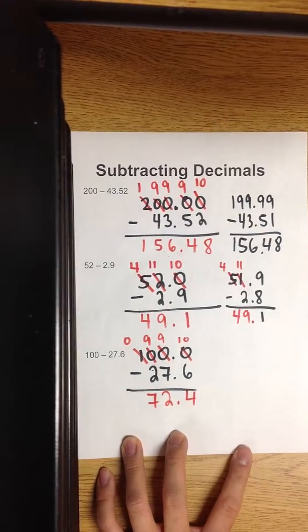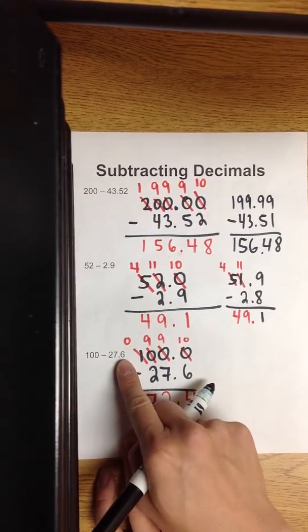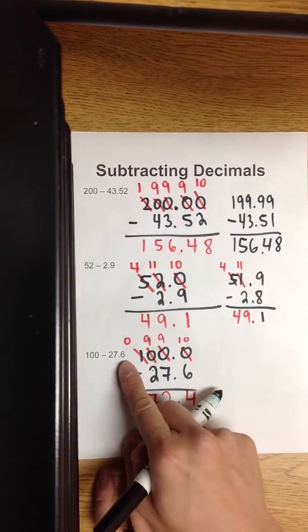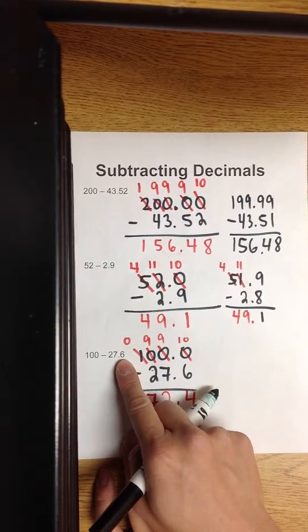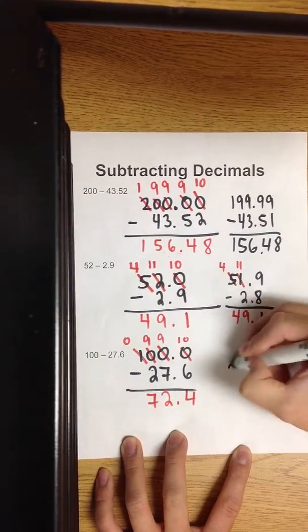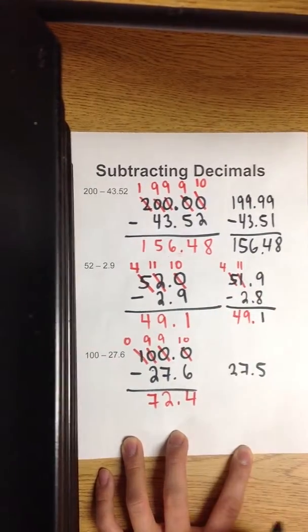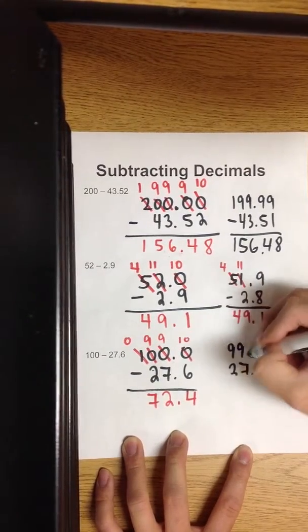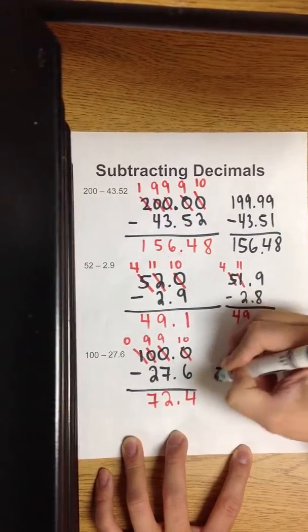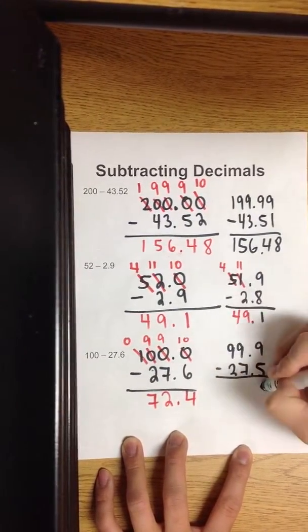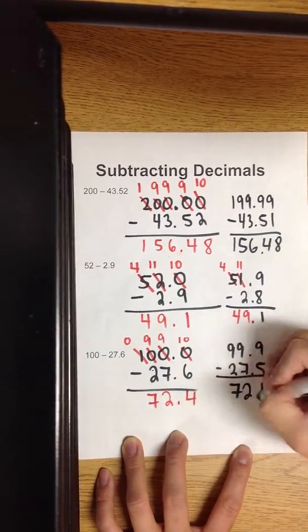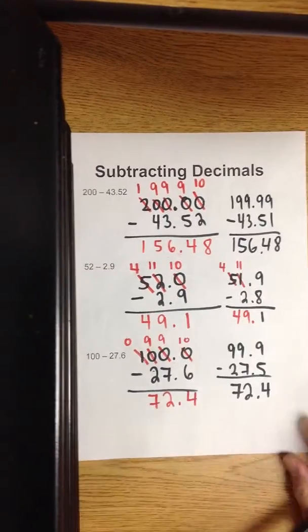For those who like the shortcut: there are zeros here so let's do a shortcut. This is in the tenths place, so let's take away one tenth from each. That'll be twenty-seven and five tenths. If I take away one tenth from one hundred, it'll be ninety-nine and nine tenths. Nine minus five is four. Nine minus seven is two. Nine minus two is seven. Equivalent answer.